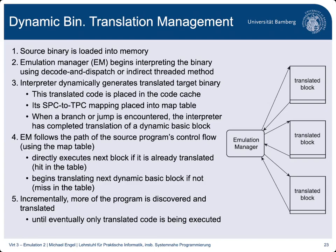An interesting real-world example is FX32 by Digital Equipment Corporation, which translated x86 Windows binaries to run on their Alpha processor. FX32 used a two-phase approach: on the first program run it only interpreted and collected profiling statistics about execution frequency of functions and loop bodies, then saved this information with the original program. On the second and subsequent runs it performed dynamic translation guided by the profiling data. There are great papers on FX32 if you're interested.